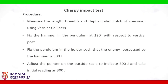To start the experiment, measure the length, breadth, and depth under notch of the specimen using vernier calipers. Fix the hammer in the pendulum at 120 degrees with respect to the vertical post. Fix the pendulum in the holder such that the energy possessed by the hammer is 300 joules. Adjust the pointer on the outside scale to indicate 300 joules and take the initial reading as 300 joules.